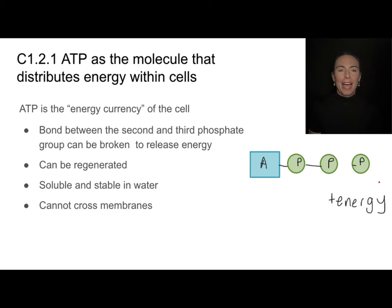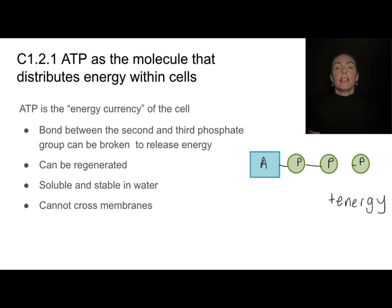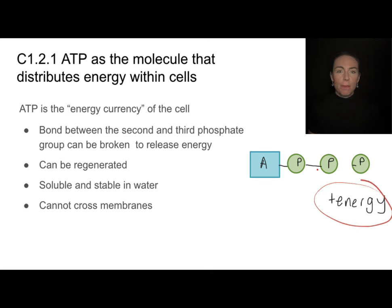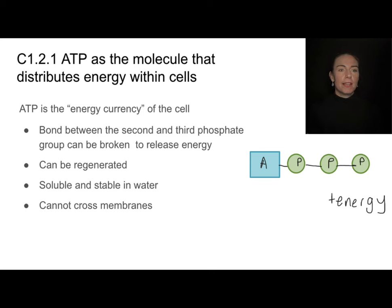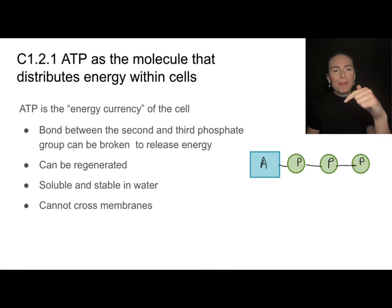So now I don't have ATP anymore — I have ADP, adenosine diphosphate. I can, however, regenerate ATP. If I add that energy back in, I can recreate that bond. So it's something that I can regenerate quite easily, and ATP and ADP work in a cycle.